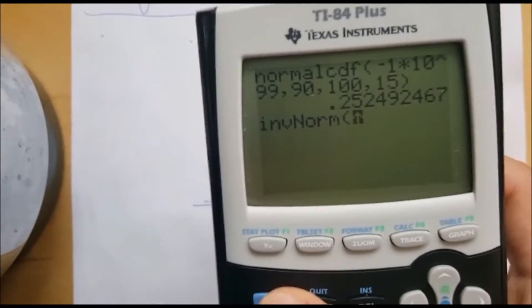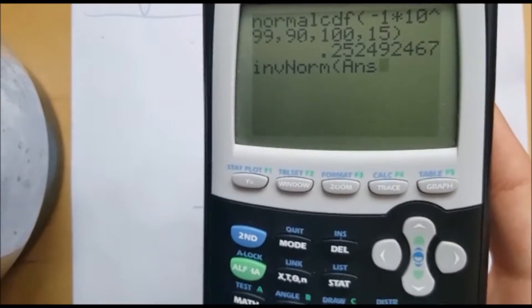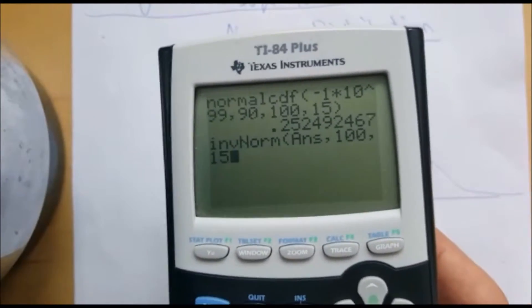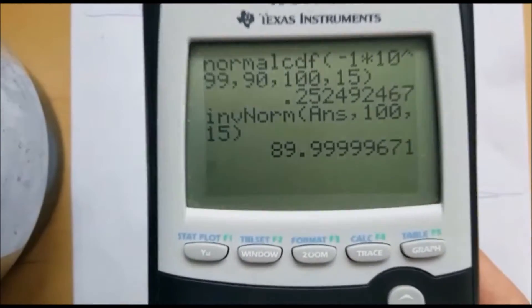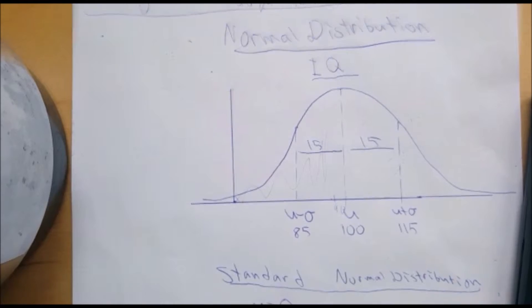First you plug in the probability, I'm just plugging in the answer, then the mean, then the standard deviation. So mean was 100, standard deviation was 15. And this is in fact 90, it's almost 90. So it works.